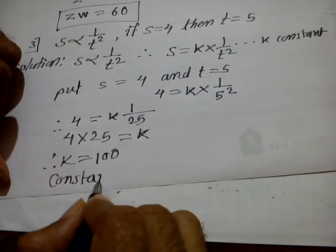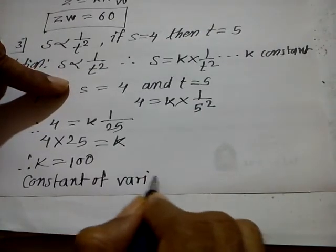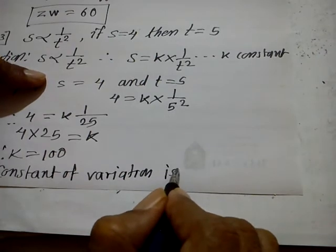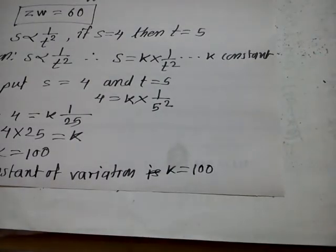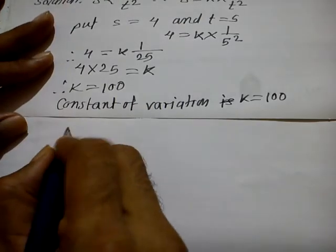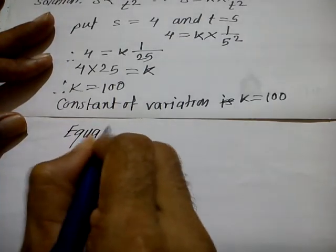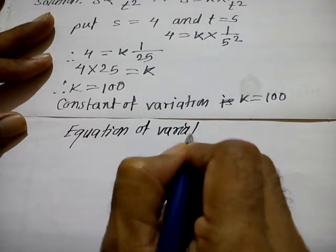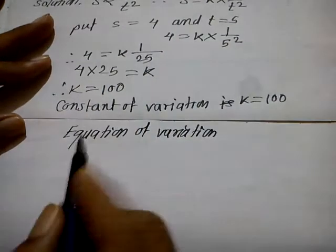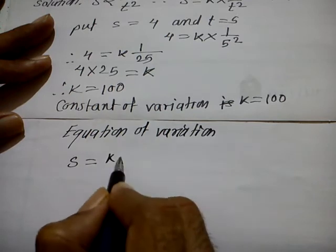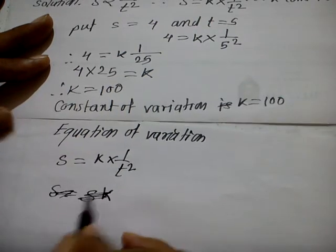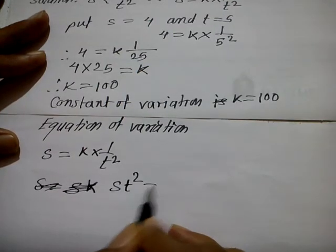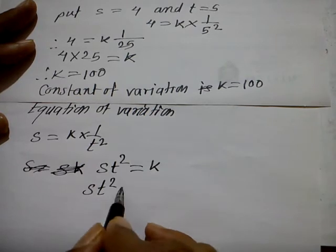The constant of variation K is equal to 100. The equation of variation: s is equal to K into 1 upon t squared, so s into t squared is equal to K. Therefore the equation of variation is s into t squared is equal to 100.